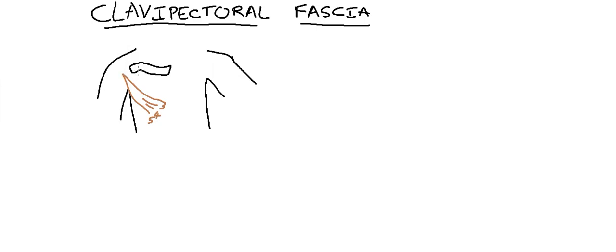So this is the extent of Clavipectoral Fascia. It will enclose this muscle and extend onto the axilla. Superiorly it also encloses one more muscle which is right beneath the clavicle. The name of the muscle is subclavius. So superiorly it encloses one more muscle called subclavius.